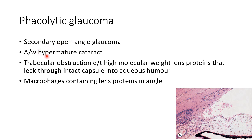Phacolytic glaucoma usually occurs due to hypermature cataract. In this case, there is trabecular obstruction due to high molecular weight lens proteins that leak through an intact capsule into the aqueous humor. Macrophages containing lens proteins can be seen in the angle, as you can see in this picture.